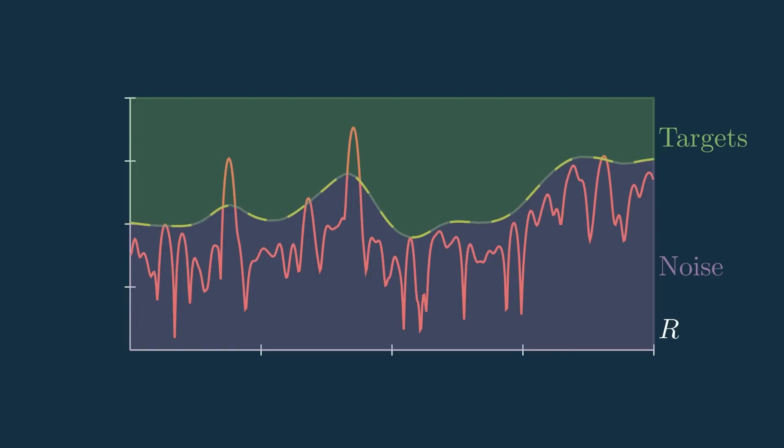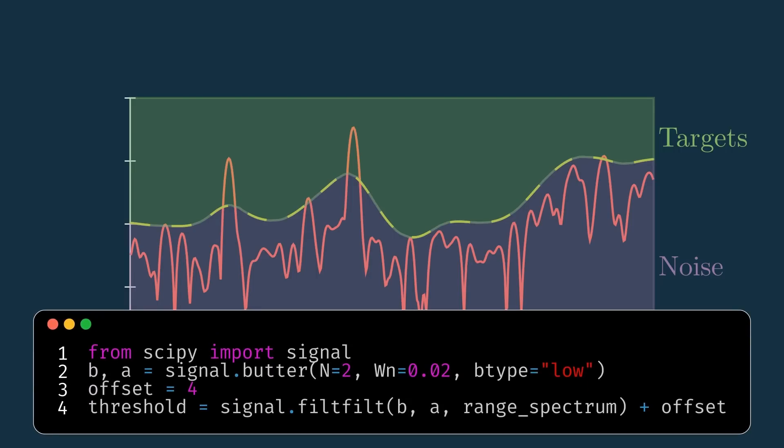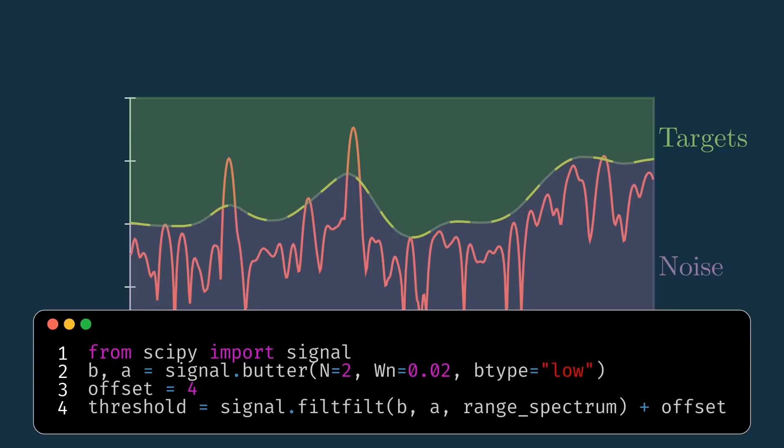By the way, this example dynamic threshold is literally just a low-pass filter applied to the range spectrum with an offset, which is another dynamic threshold option, but that's not what we're here to talk about.